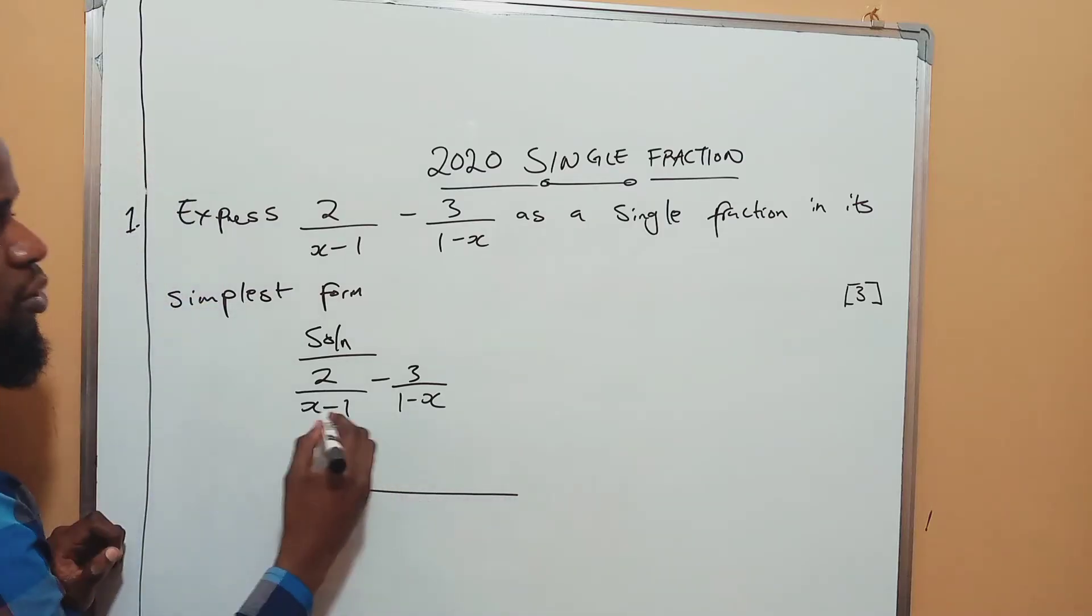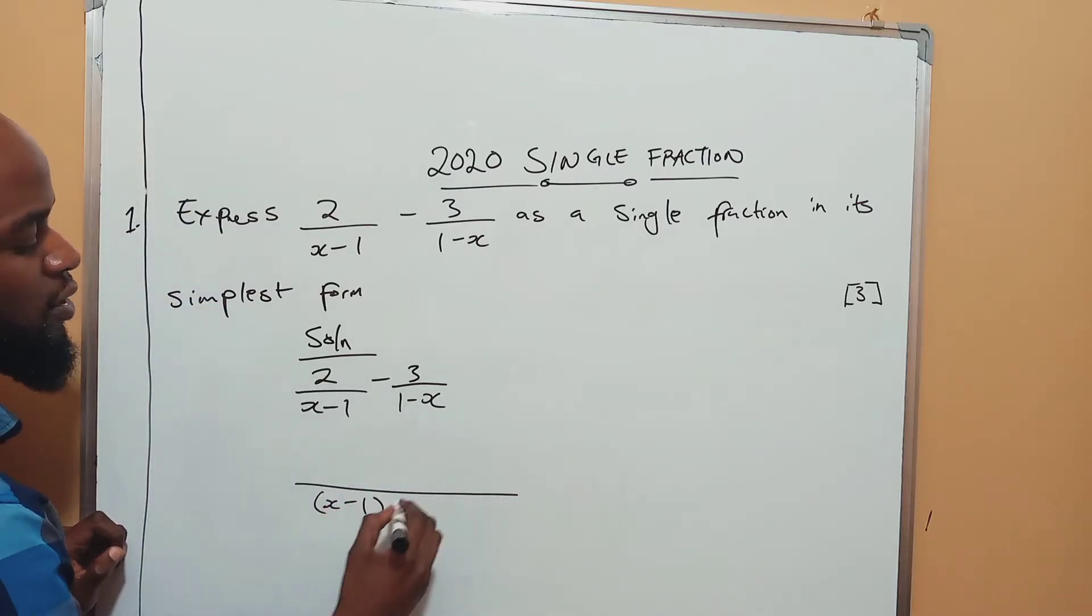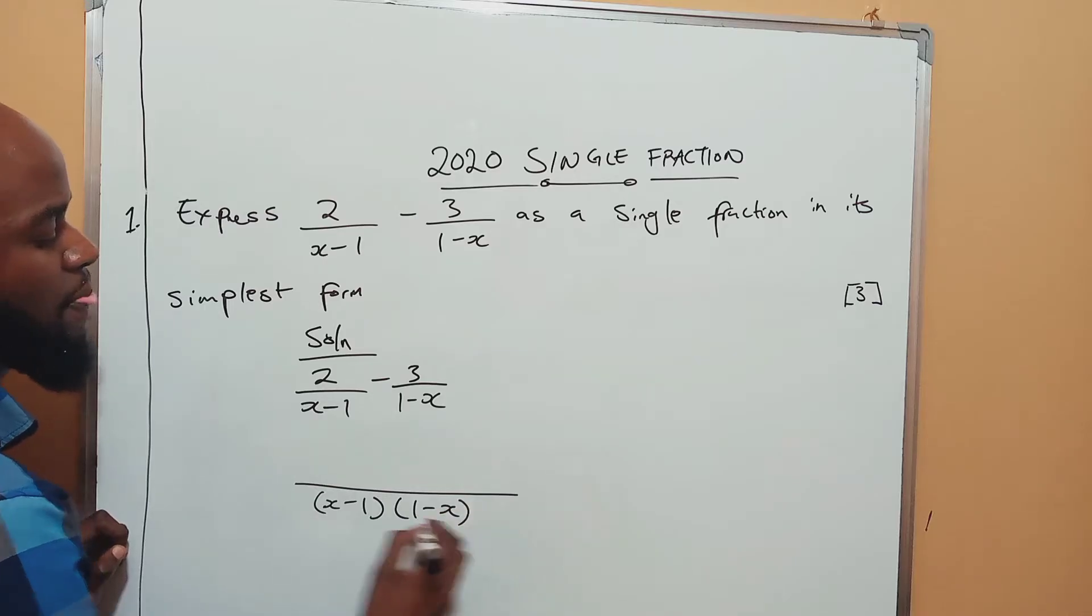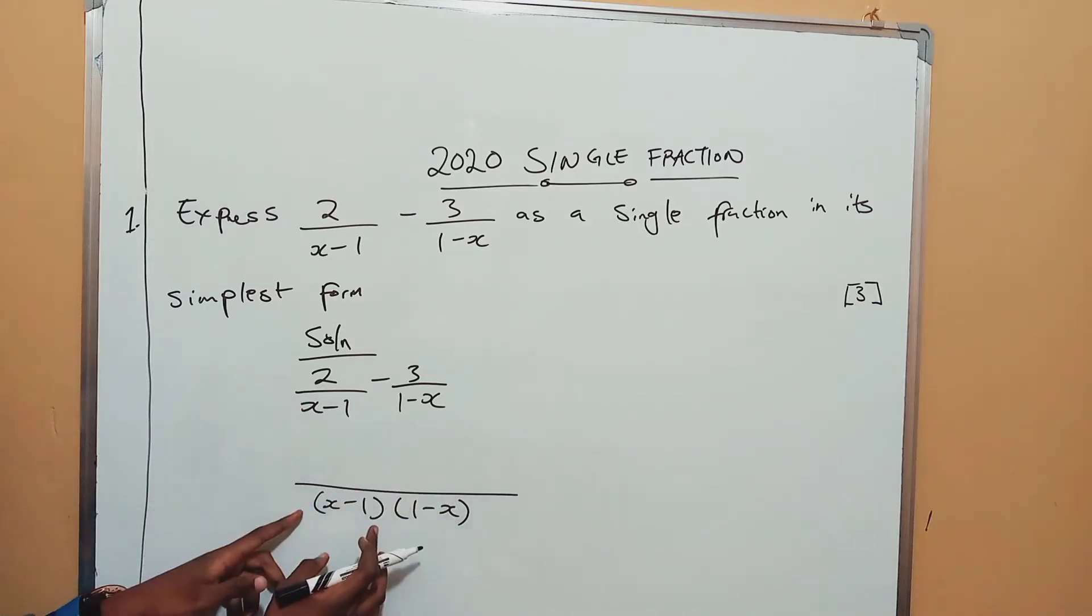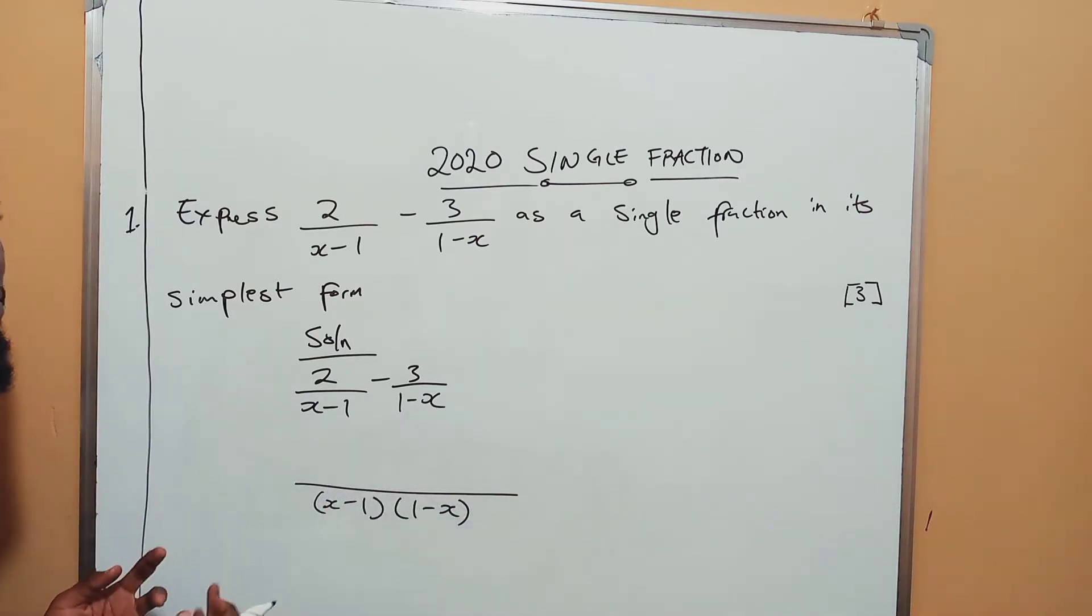What's common is both of these: x minus 1 and 1 minus x. So you put them in brackets. You start with this one, put in brackets, then you put this in brackets.